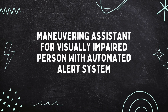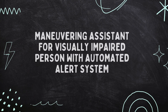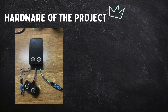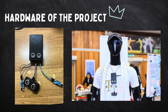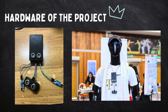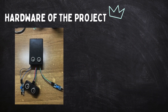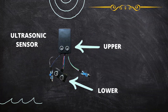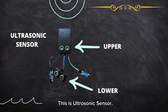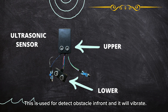This is the Maneuvering Assistant for Visually Impaired Person with Automated Alert System. This is the hardware of the project — it is a wearable device. As you can see, this is the ultrasonic sensor, which is used to detect obstacles in front, and it will vibrate.